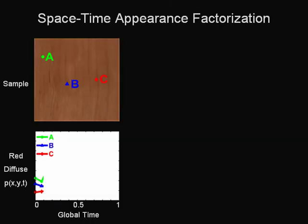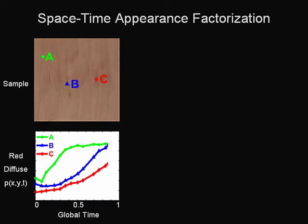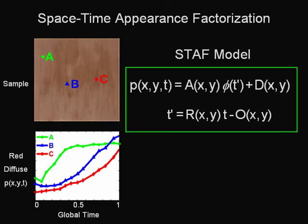In this example, we show curves corresponding to the temporal variation in the red diffuse channel for three surface points on the drawing wood example. These curves look rather different. Our STAF model is based on the insight that a process, like drawing, has an overall time variation described by a single curve.